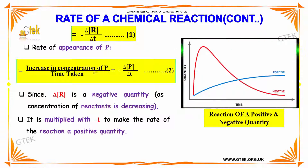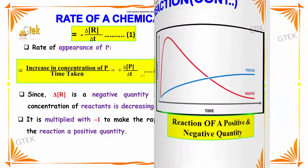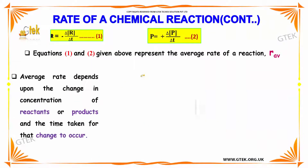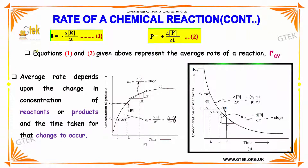The rate of appearance of product P equals the increase in concentration of product divided by time taken: ΔP/ΔT. ΔR is negative, indicating the reactant is reducing; ΔP is positive, indicating the product is being produced. These two equations represent the average rate of the reaction, R_average.